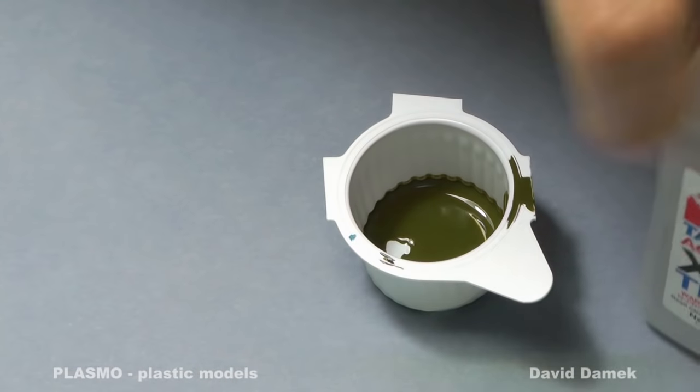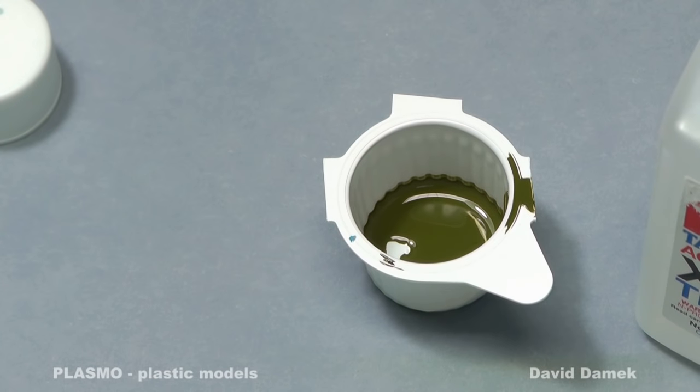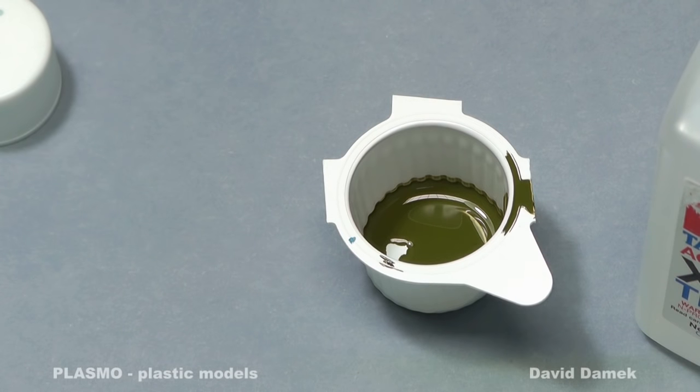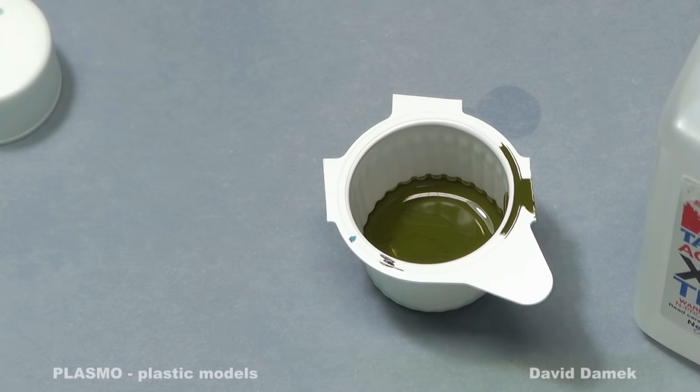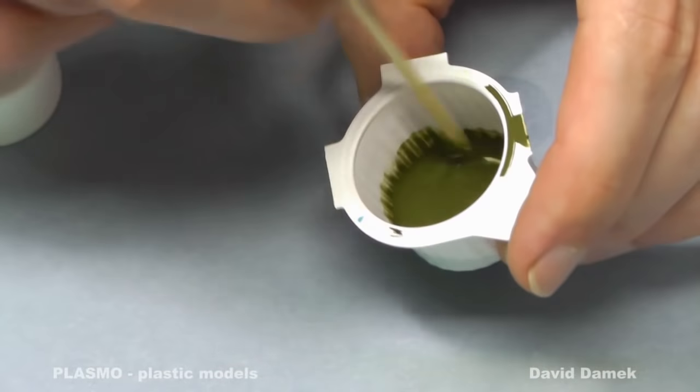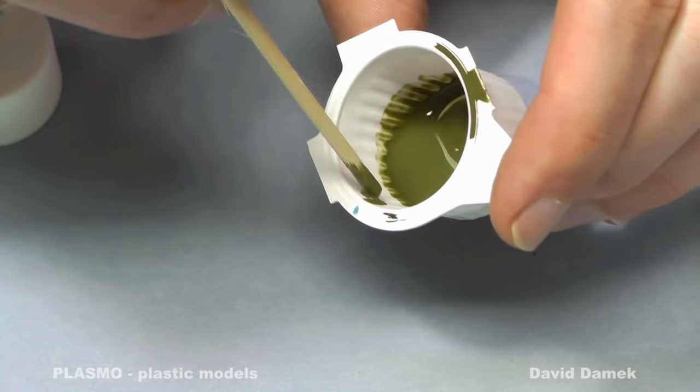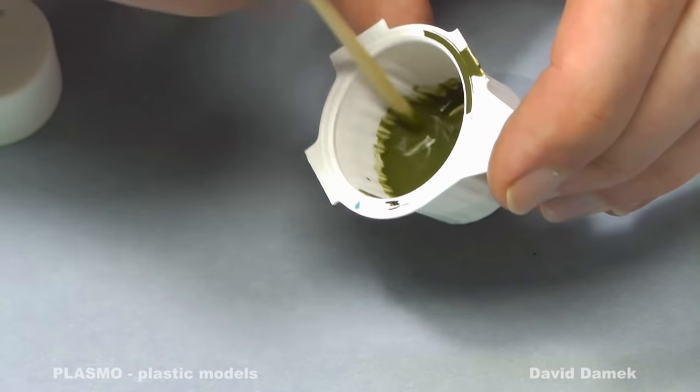You will never achieve perfect results with water. Rather use original Tamiya X20A thinner, but you can use original ethanol too. I don't know the precise thinning ratio because all shades require a different amount of thinner, and it depends on the size of airbrushing nozzle too.